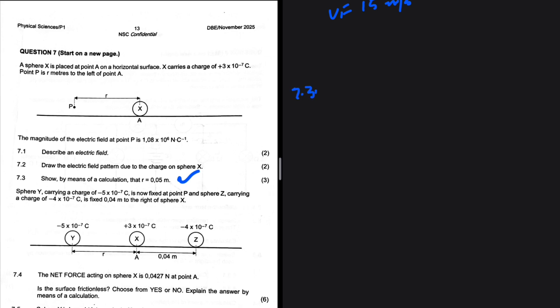So what are we looking for and what do we have? r equals 0.05, that's what we're trying to show. What do we have? We're given the electric field at P, it is 1.08 times 10 to the 6, and then we have the charge of X, QX, which is 3 times 10 to the minus 7 coulombs.